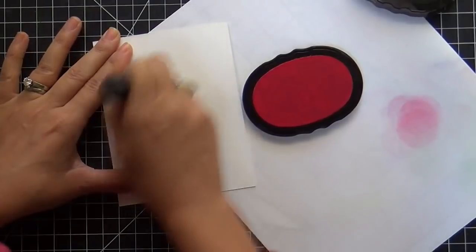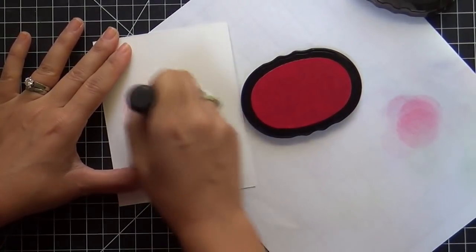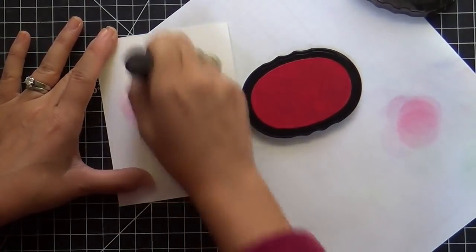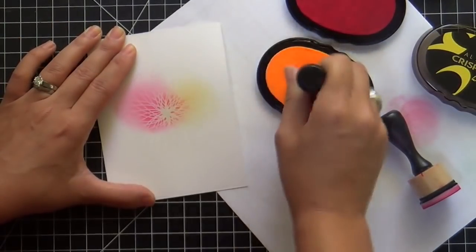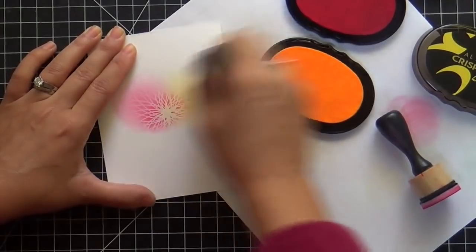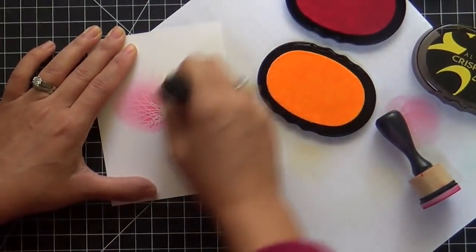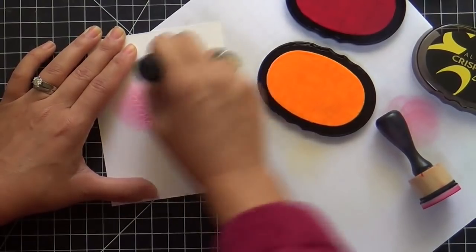Once I stamped that, I went around with Versamark ink and embossed it in clear. Now I'm going over it with some Altenew inks. I've got my little Ranger mini ink blenders here. I started with Coral Berry, and now I'm doing Warm Sunshine. I love going in rainbow order.